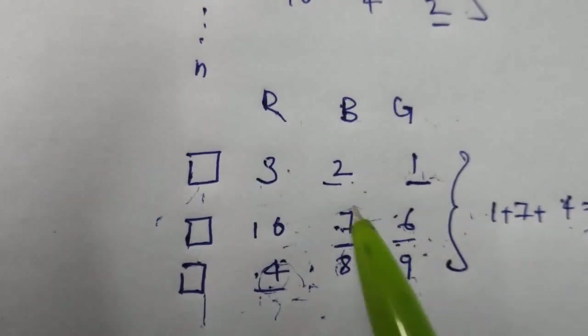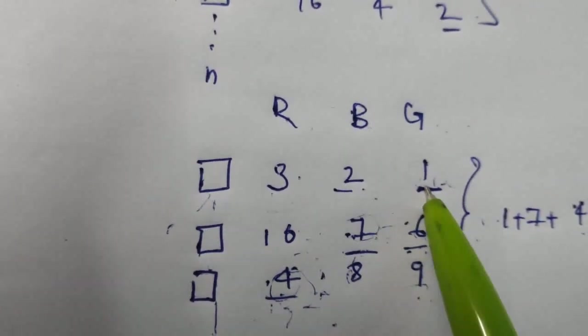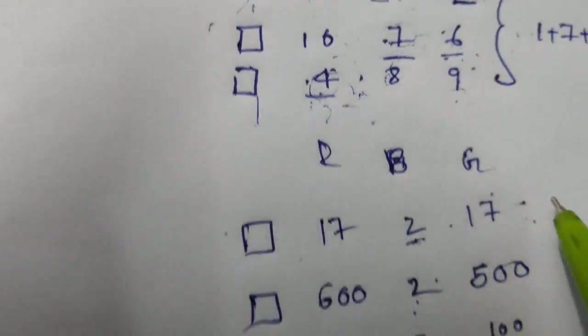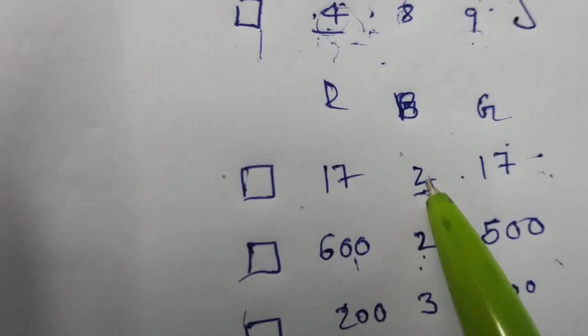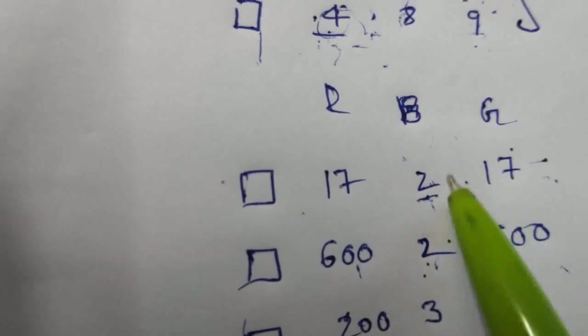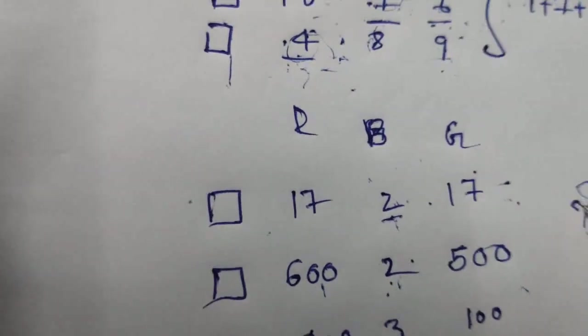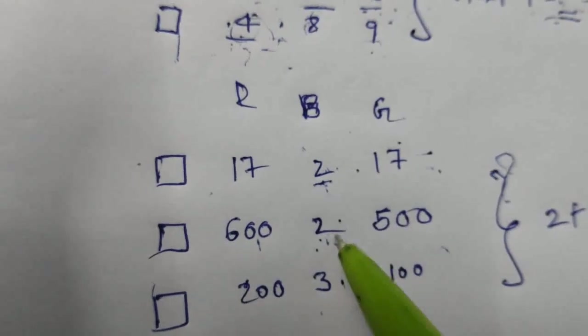But every time we shouldn't choose the minimum one which is present in that particular house. Let us have a look at another example. If you see this example, if you choose 2 in the first house we can't choose 2 in the second house which will increase our cost.